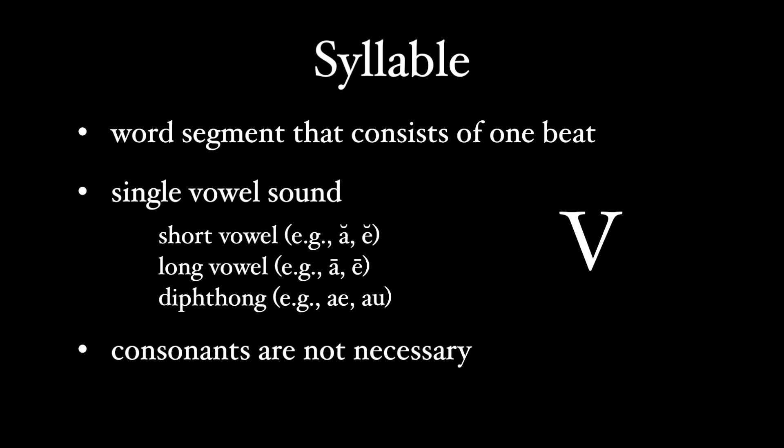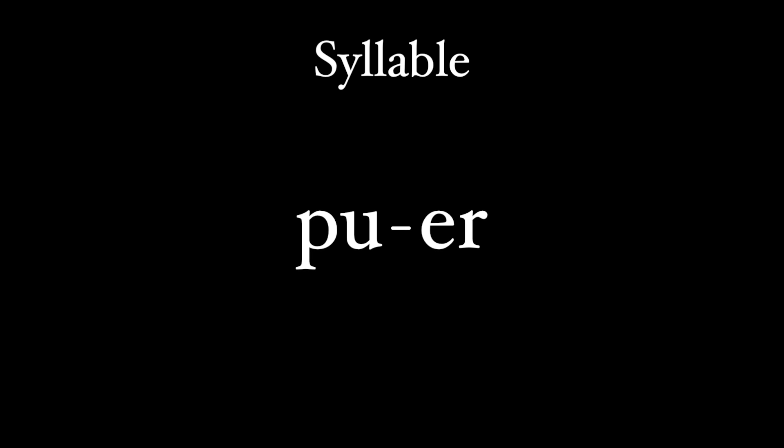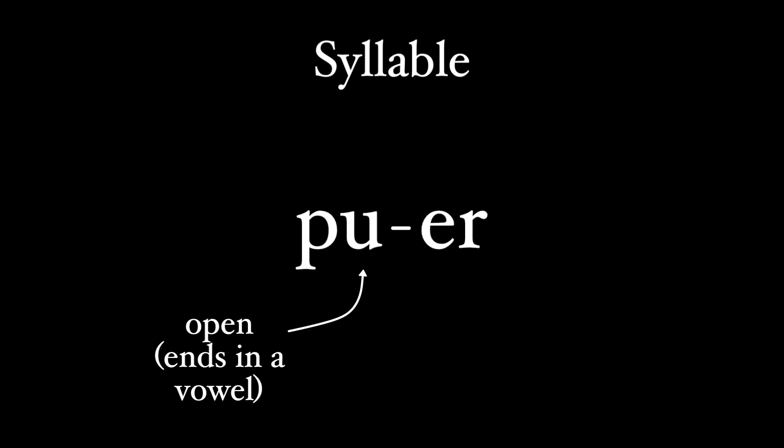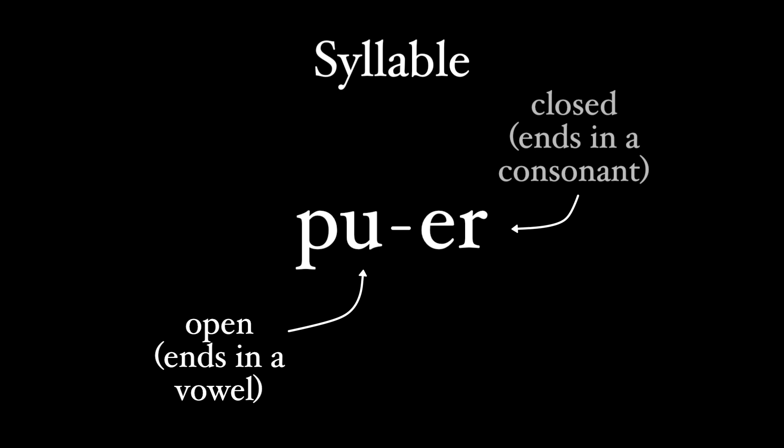Grammarians call syllables that end in a consonant 'closed' and those that don't 'open.' So if this is our Latin word properly syllabified - and I'll get to the rules later - the first syllable is open while the second syllable is closed.